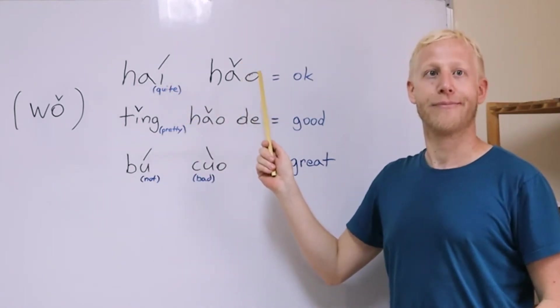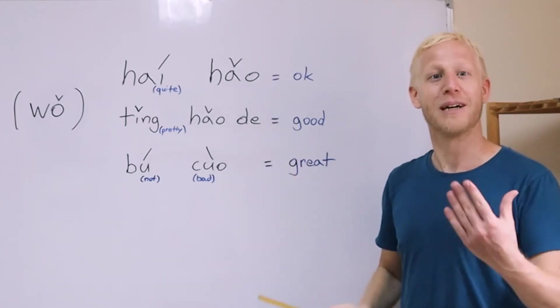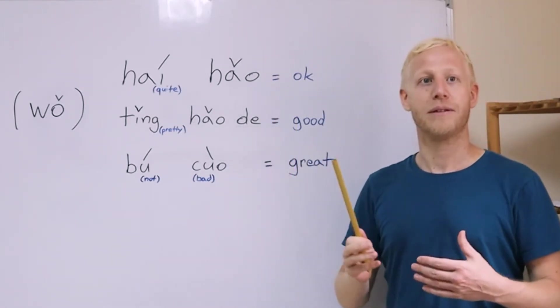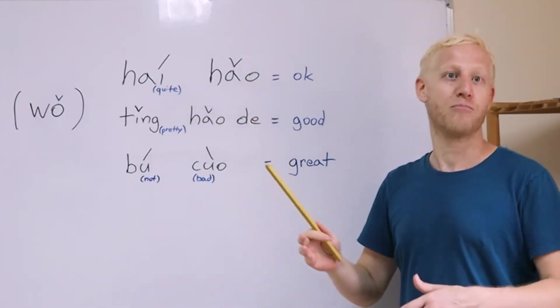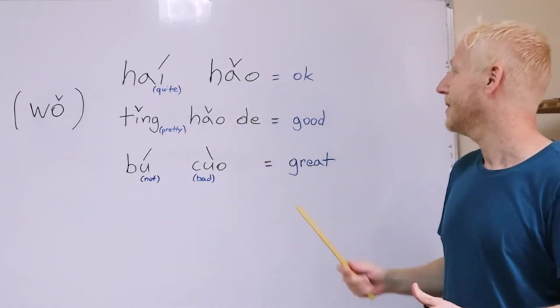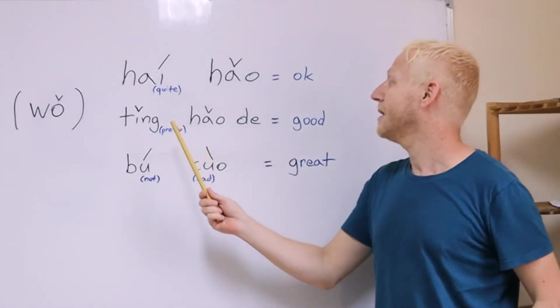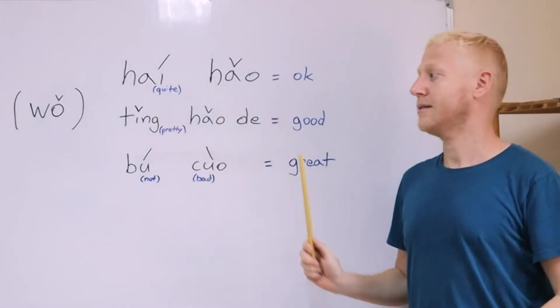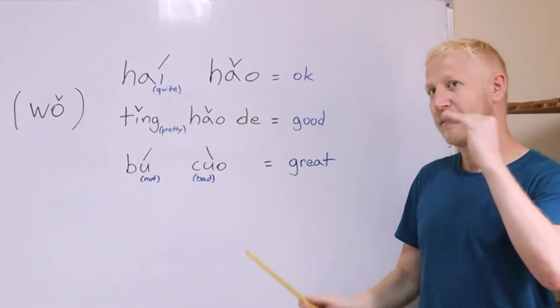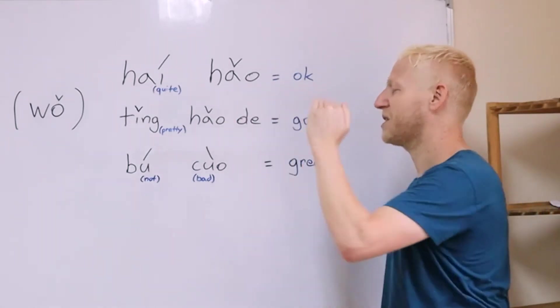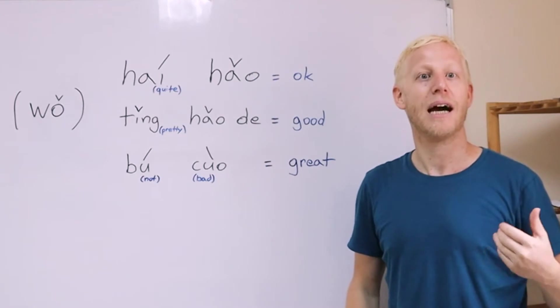还好. You're probably really familiar with the 好 right, from 你好. 好 means well. 还好 means quite well. The second one on a level higher. 挺好的 which also means quite or pretty. But in Chinese this is on a level higher.